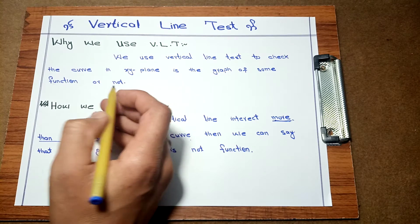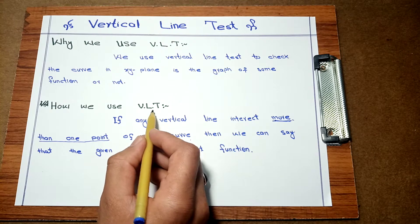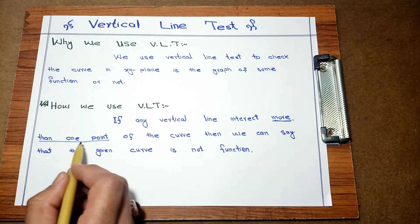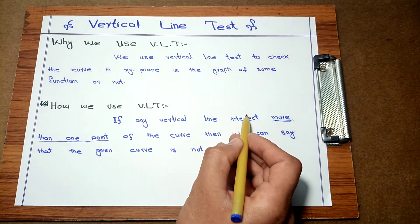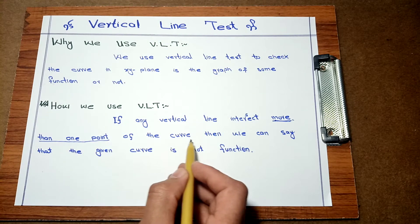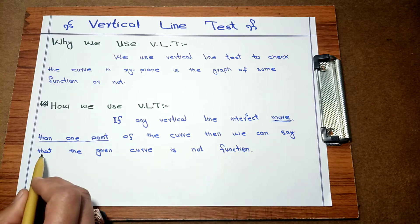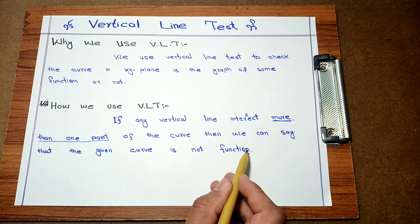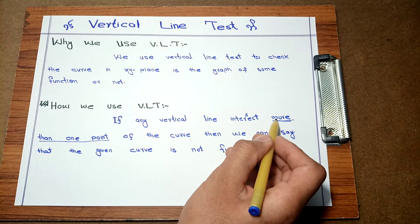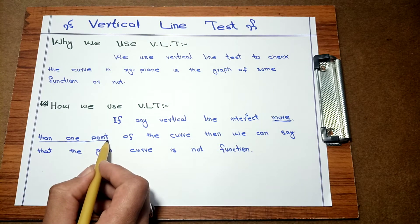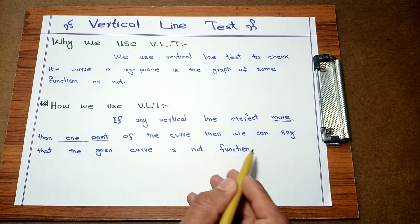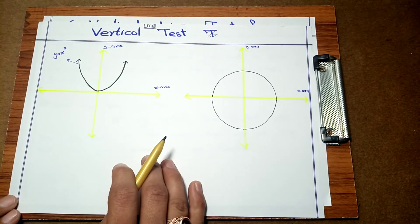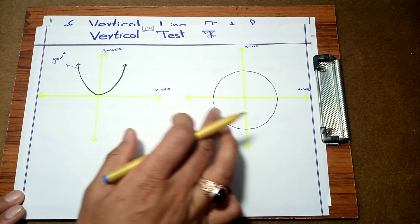How do we use the vertical line test? If any vertical line intersects more than one point of the curve, then we can say that the given curve is not a function. The important point is the phrase 'more than one point.'